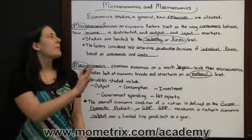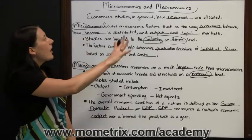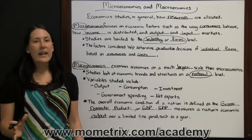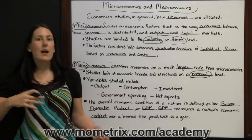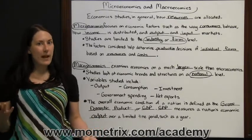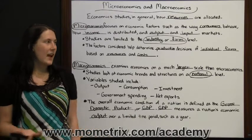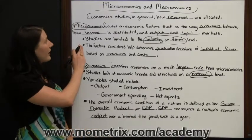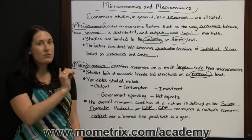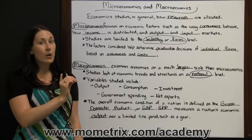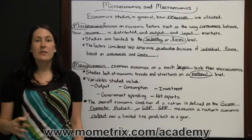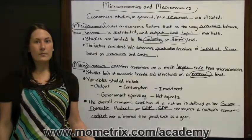Important things to remember: economics is always going to be studying how our resources are allocated, how people are buying things, how people are selling things, and how things are balancing out or not balancing out. Microeconomics is going to focus on a specific industry, firm, or company, where macroeconomics is going to focus on the economy of a nation as a whole.